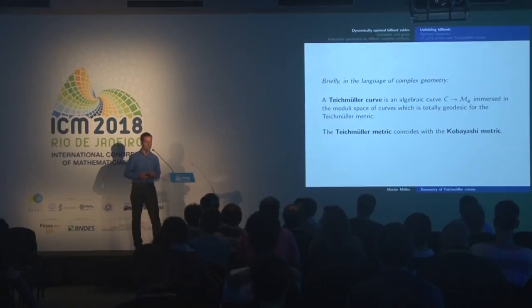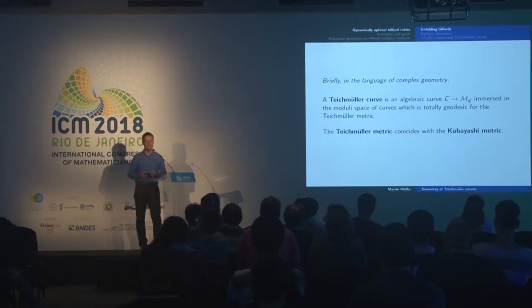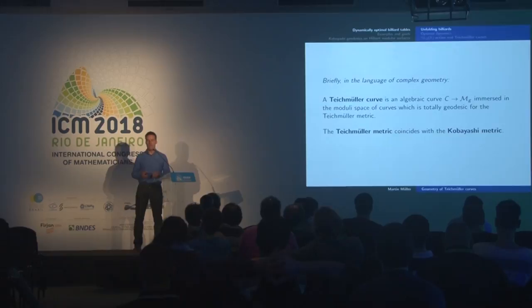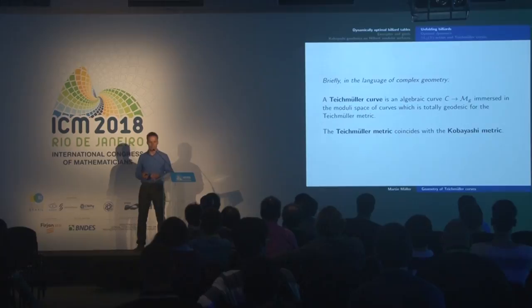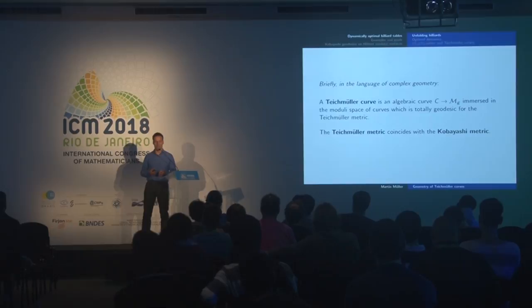I don't require you to know the definition of the Teichmüller metric, nor the equivalent Kobayashi metric — just to tell you that both are natural metrics on Teichmüller space or on any complex space. Teichmüller in the 30s knew many things about the metric he studied, but he didn't know about the notion of Teichmüller curves — that came only about 60 years later. From that definition, you probably won't find a way to directly construct such an object.